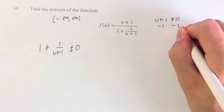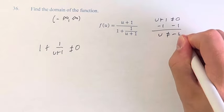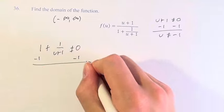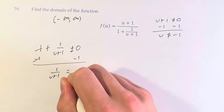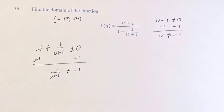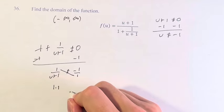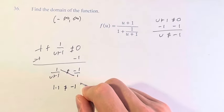First, we solve this one: u cannot equal negative 1. For the second constraint, we subtract 1 from both sides. We get 1/(u+1) ≠ -1. Writing this over 1, we can cross multiply, and we get 1 × 1 cannot equal -1 times (u+1).